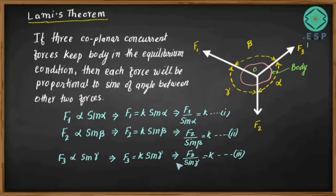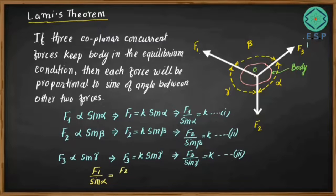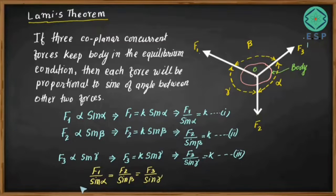Combining all three equations, since the right-hand sides are all equal to K, the left-hand sides must also be equal. So finally we can write: F1 / sin(alpha) = F2 / sin(beta) = F3 / sin(gamma). This is the main outcome of Lamy's theorem.